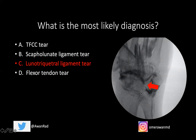A TFCC tear — the triangular fibrocartilaginous structure that runs between the radius and the ulna — would show contrast extravasating into the distal radioulnar joint. You would see contrast pooling right there in the distal radioulnar joint. We don't see contrast extravasating into the distal radioulnar joint, so we can infer that the TFCC is actually intact.